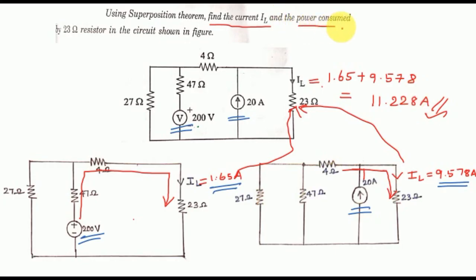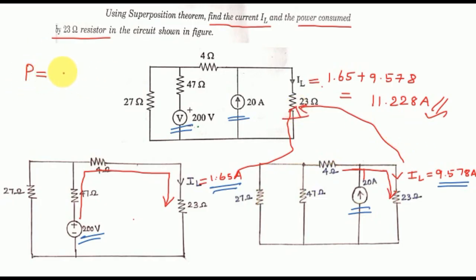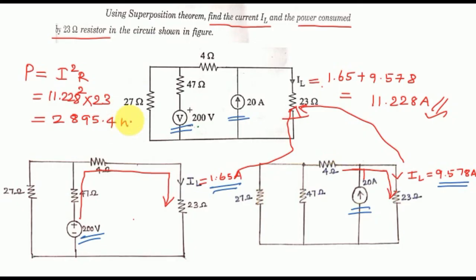The power consumed by the 23 Ohm resistor: the current through 23 Ohm is 11.228A. Using the formula P = I²R: P = (11.228)² × 23 = 2895.4W. This is the second part of the answer. That's all.